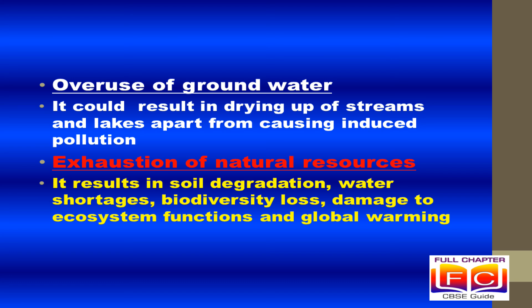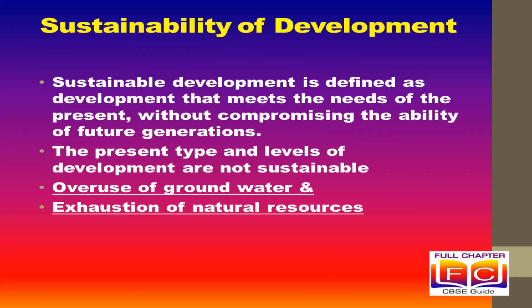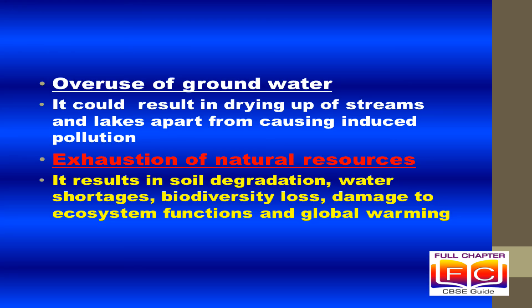Scientists have been warning that the present type and levels of development are not sustainable. Some examples are overuse of groundwater and exploitation of natural resources. Overuse of groundwater by the present generation could result in drying up of streams and lakes apart from causing induced pollution. Exploitation of natural resources results in soil degradation, water shortages, biodiversity loss, damage to ecosystem and global warming.